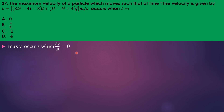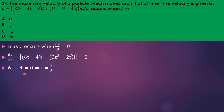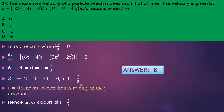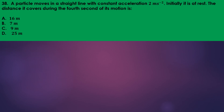Differentiating the velocity vector gives 6t minus 4 for the i-component and 3t² minus 2t for the j-component. Setting the derivative to zero: from the i-component 6t minus 4 = 0 gives t = 2/3, and the j-component also gives t = 2/3 or t = 0. We ignore t = 0 because substituting into the i-component gives dv/dt = -4, not zero. So t = 2/3 is our answer, choice B.